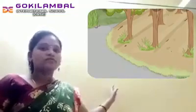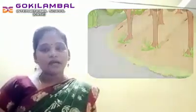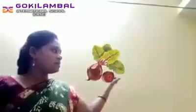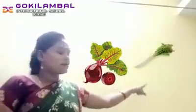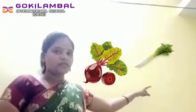The fourth function is, in some plants, it stores food materials also. For example, beetroot, radish, and carrot. These are the best examples of storage of food materials in the root parts. So it also prevents soil erosion.